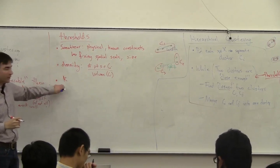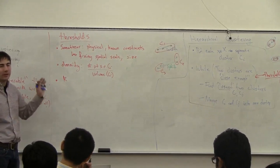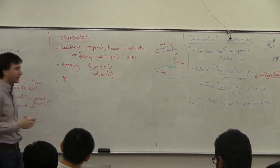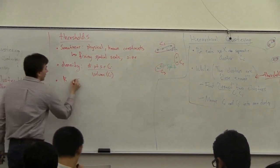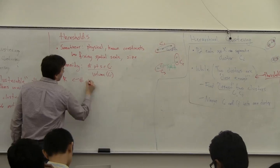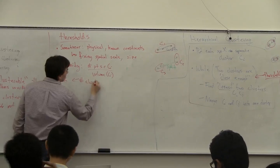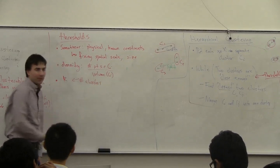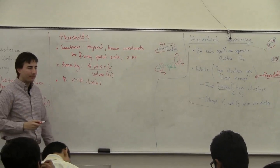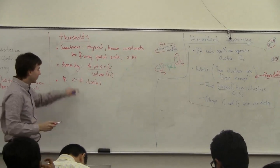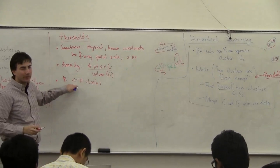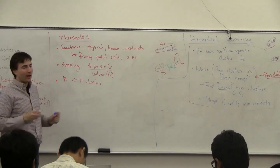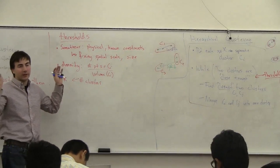There's just K — sometimes you're simply given a parameter K and you say, I want K clusters. This is the most common type of parameter people use. They set some number K, like I want 10 clusters, and that's it.